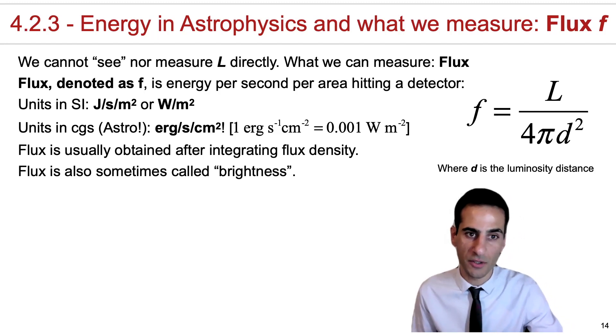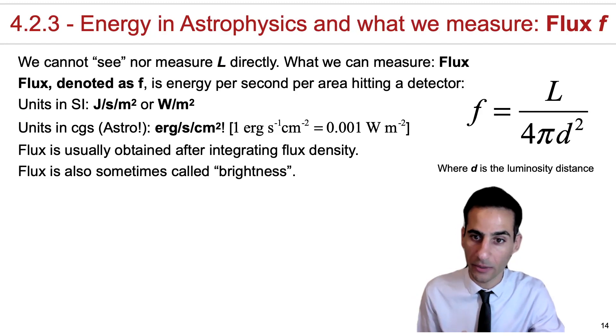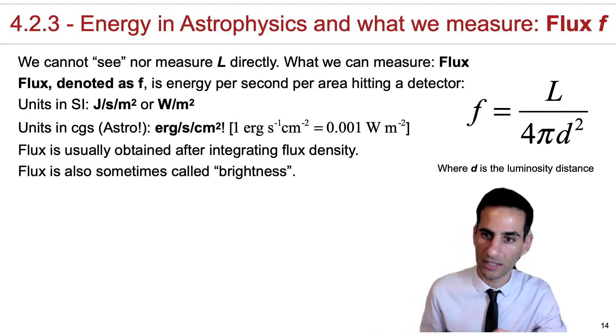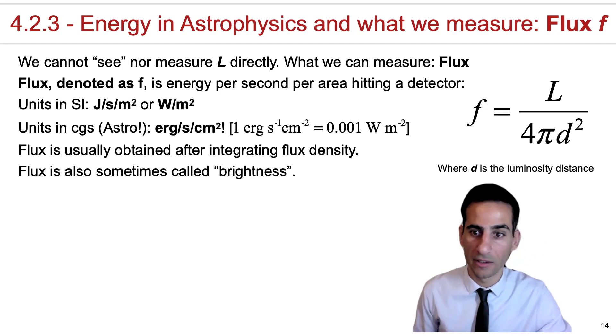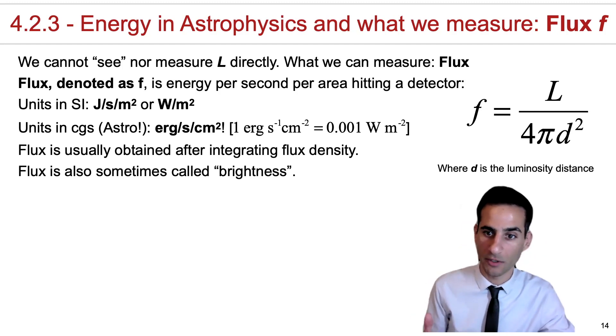The other thing to note is that flux is usually obtained after integrating a spectrum. When you disperse the light, typically what you get is something that we call flux density, and flux is what you obtain when you integrate over some wavelength or frequency. And flux is obviously an apparent quantity; the further away you are from the source, as you can see in the equation, the fainter the energy per second per area you're going to retrieve.